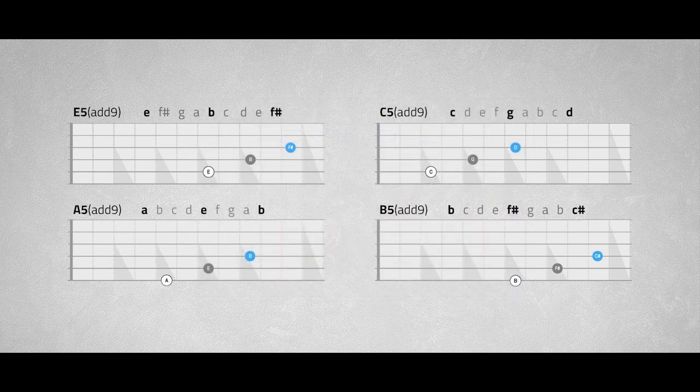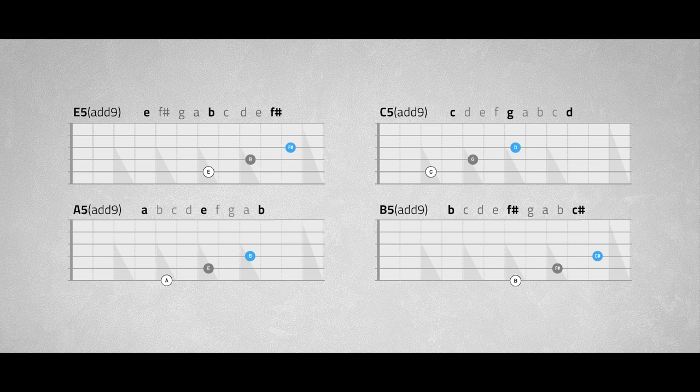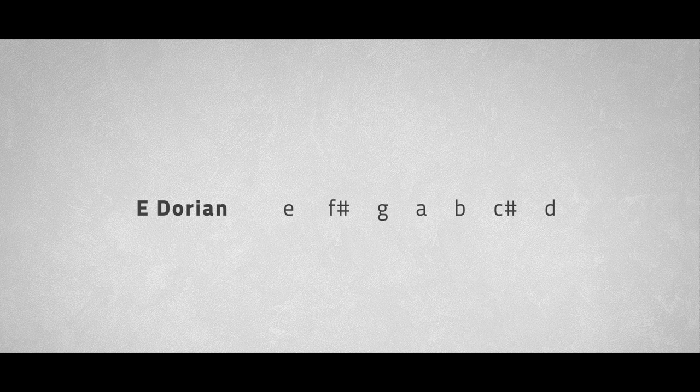Now instead of keeping the intervals in one key, we could deviate from this. The ninth in the B5 added ninth chord will be a C-sharp, which is not part of the E minor scale. So here we briefly create an E Dorian sound. You may also see this as a modal interchange. The chords of the progression look like this.